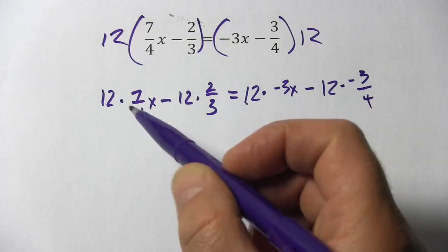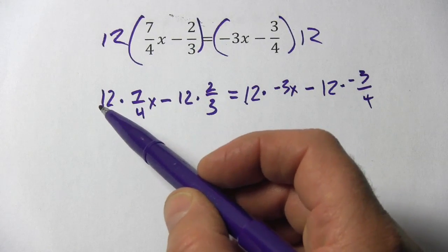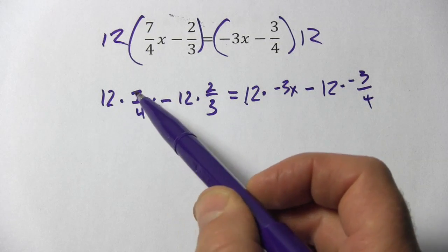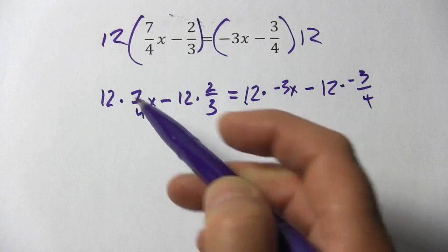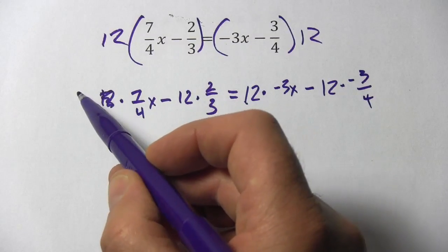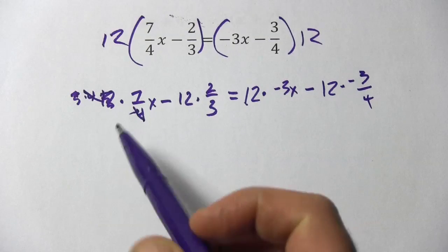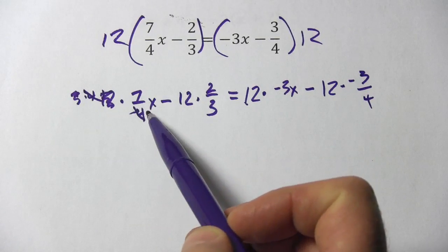Sometimes it's easier when you do the math here to think of 12 as 3 times 4 and do the canceling. You could just take 12 times 7 and then divide that by 4, but in my head I like to think 12 is 3 times 4. So this 4 is going to cancel. So all this really is is 3 times 7, so this becomes 21x.